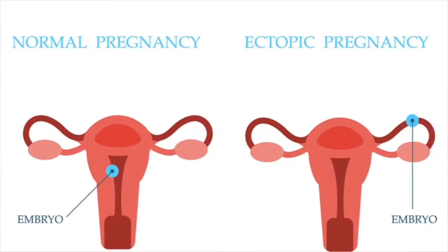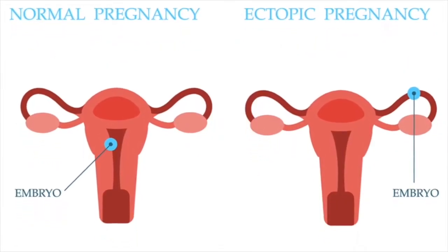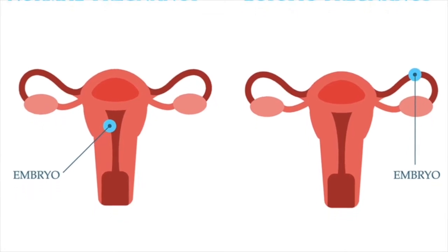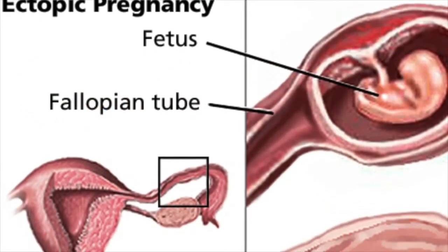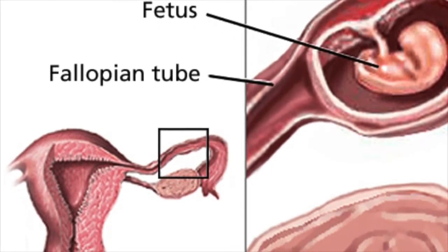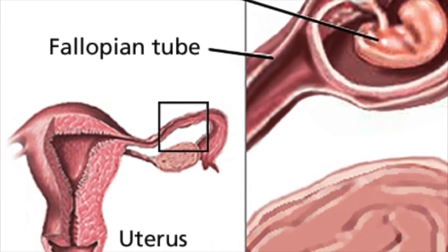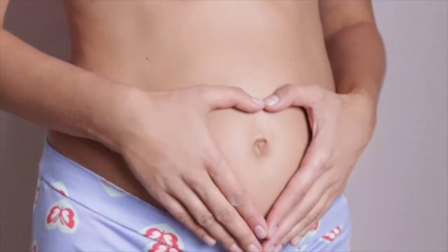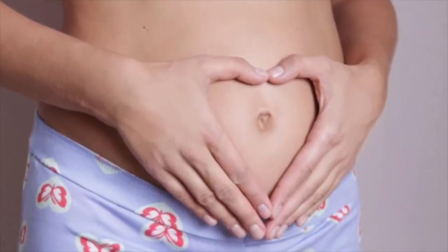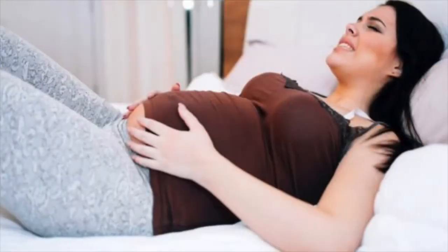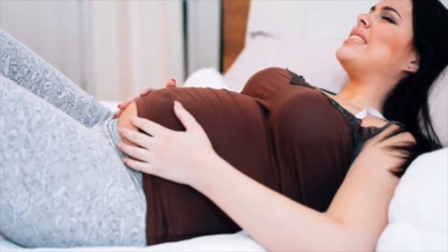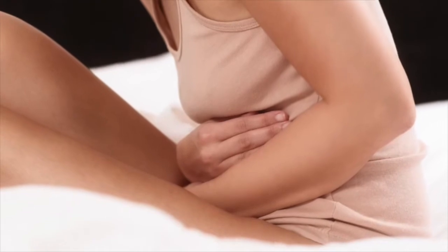Risk factors for an ectopic pregnancy include the following: maternal age of 35 to 44 years, previous ectopic pregnancy, previous pelvic or abdominal surgery, and pelvic inflammatory disease.